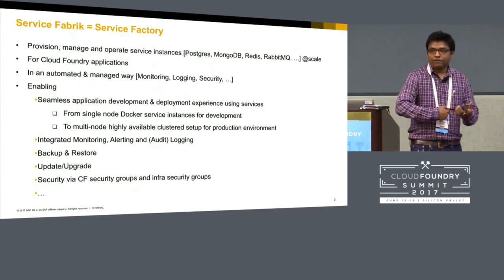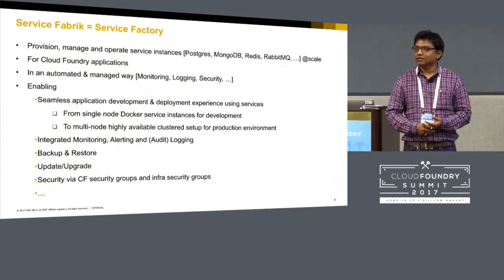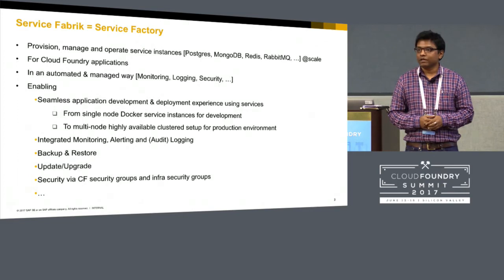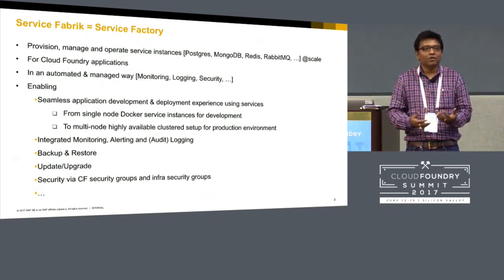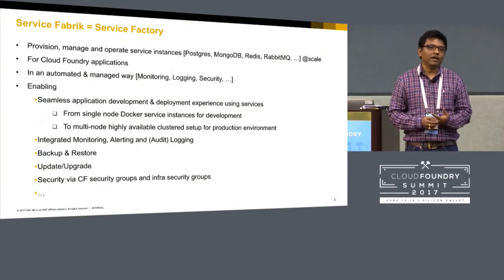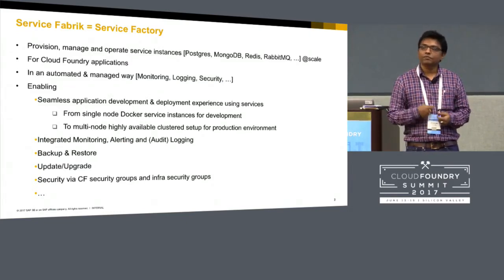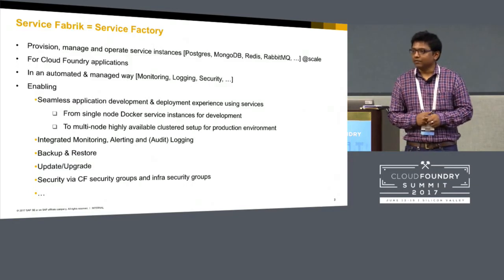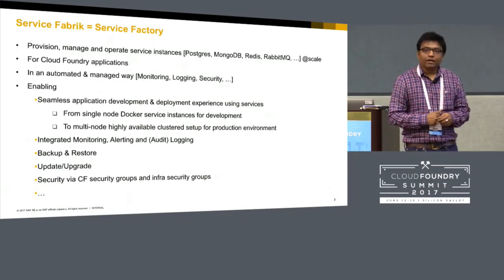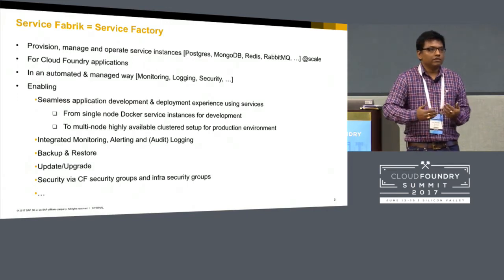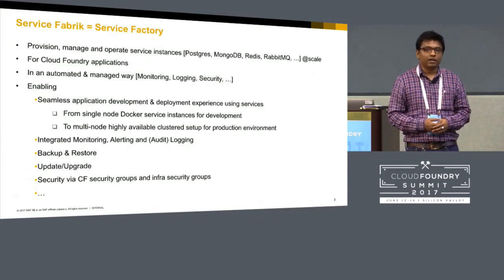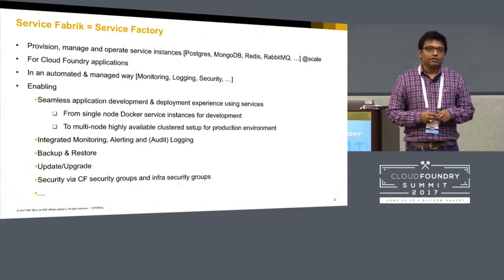Backup and restore — you have all these instances running around your organization. How do you take backup of all these instances? Service Fabric takes backups behind the scenes in an incremental, delta-backup manner. Snapshots are taken continuously, so you can go back to any point in time and restore your system if something bad happens. Update and upgrade is a continuous process — if a security patch or a new stemcell update needs to be applied, Service Fabric can do that across all instances. And of course security is very important.